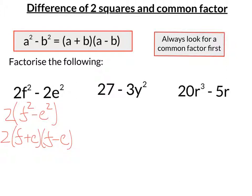OK, next one: 27 minus 3y squared. The common factor here is 3, and that leaves me with 9 minus y squared. And then again, I've got a difference of two squares inside the bracket, so that's 3 minus y, 3 plus y.